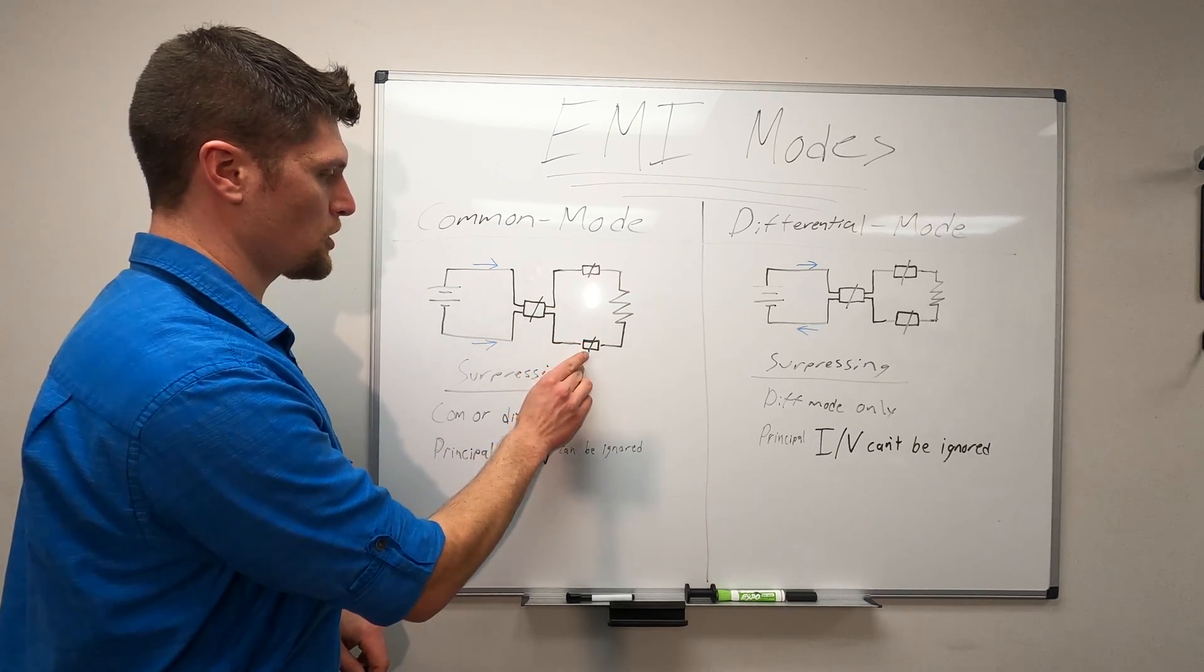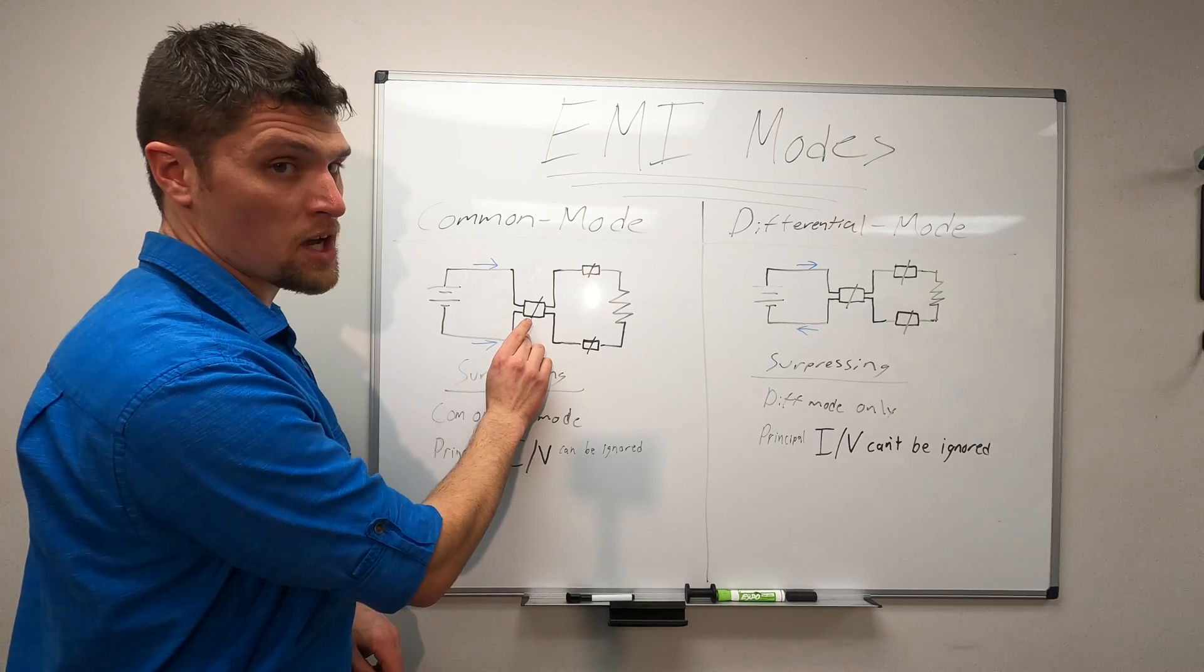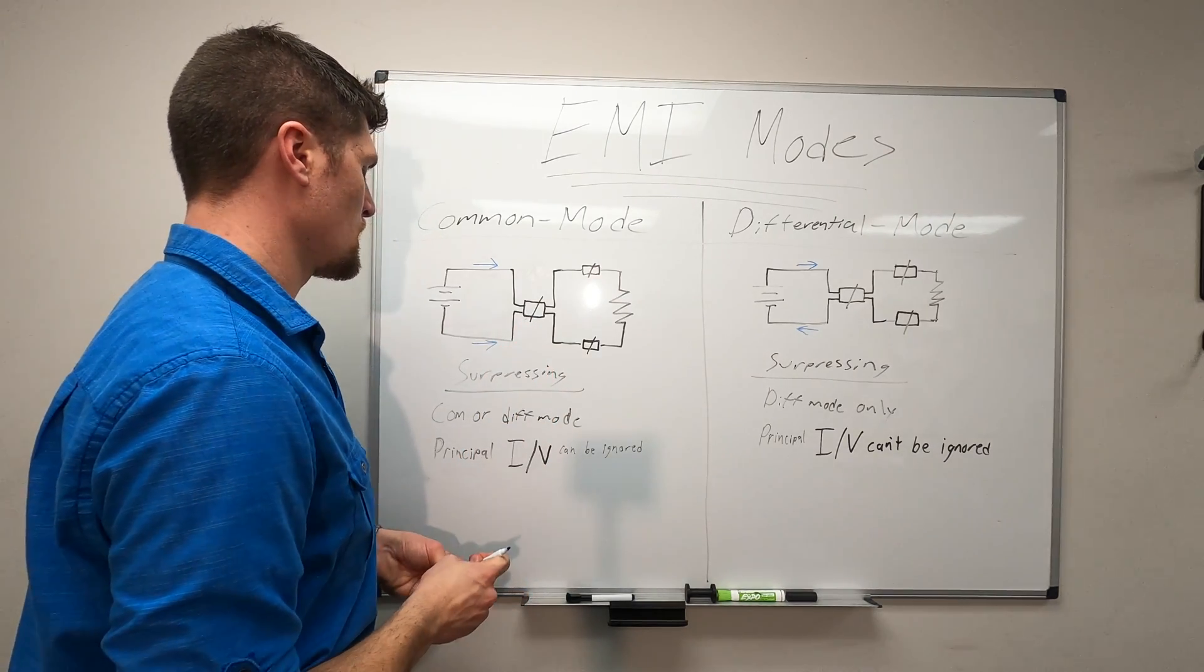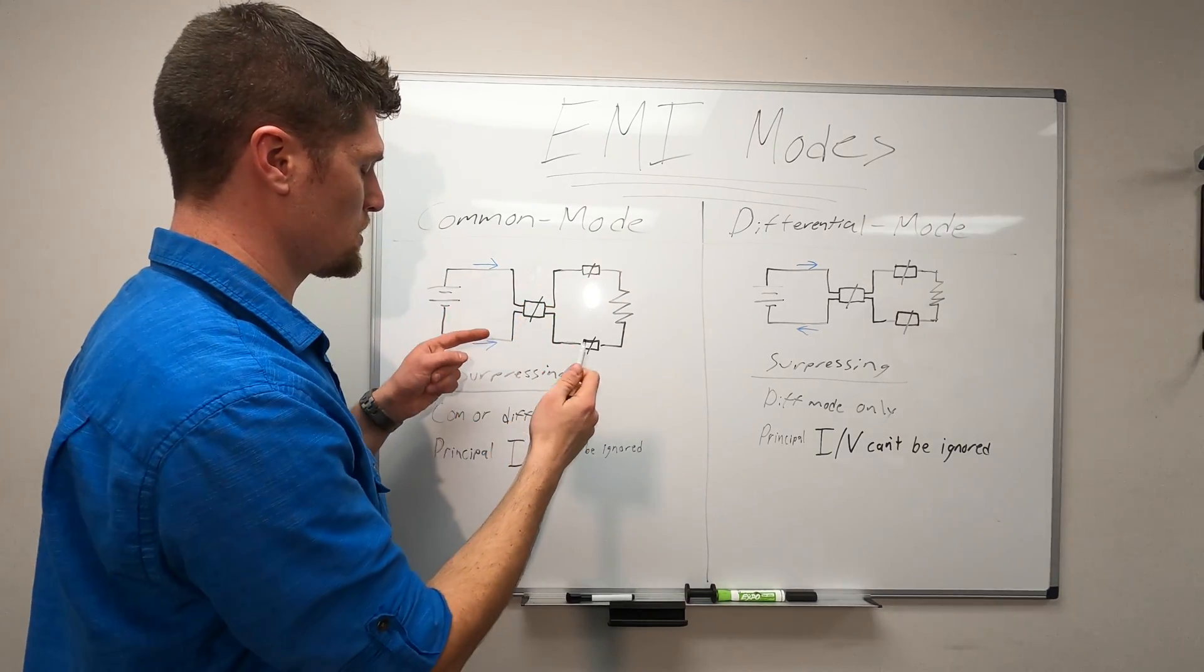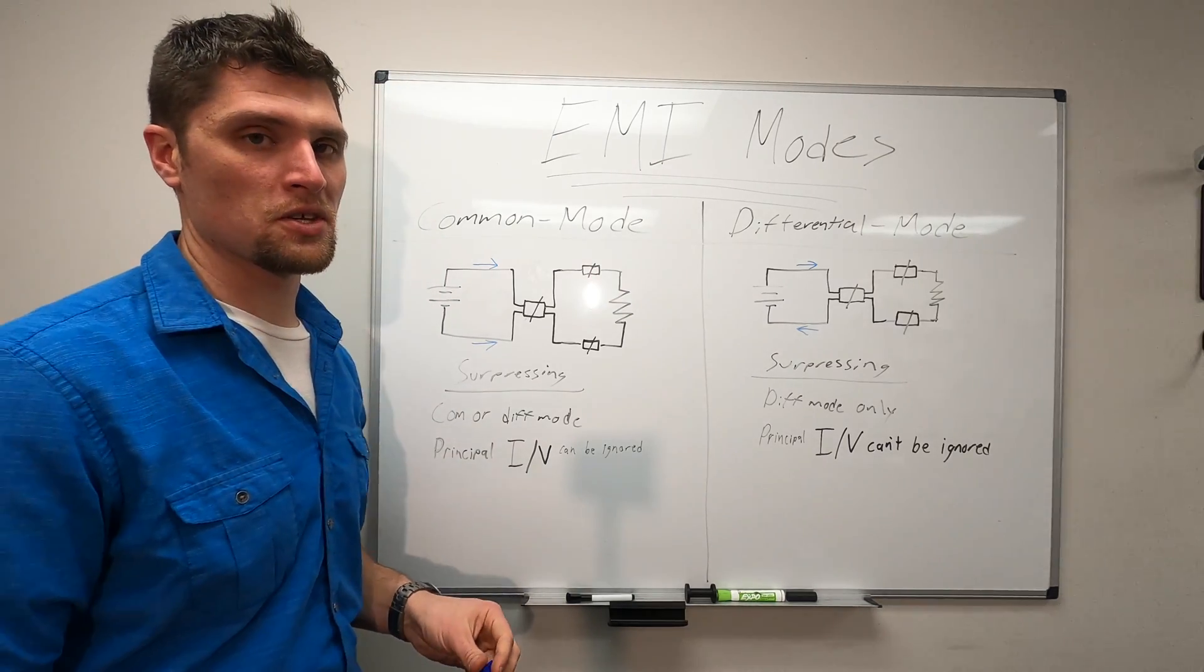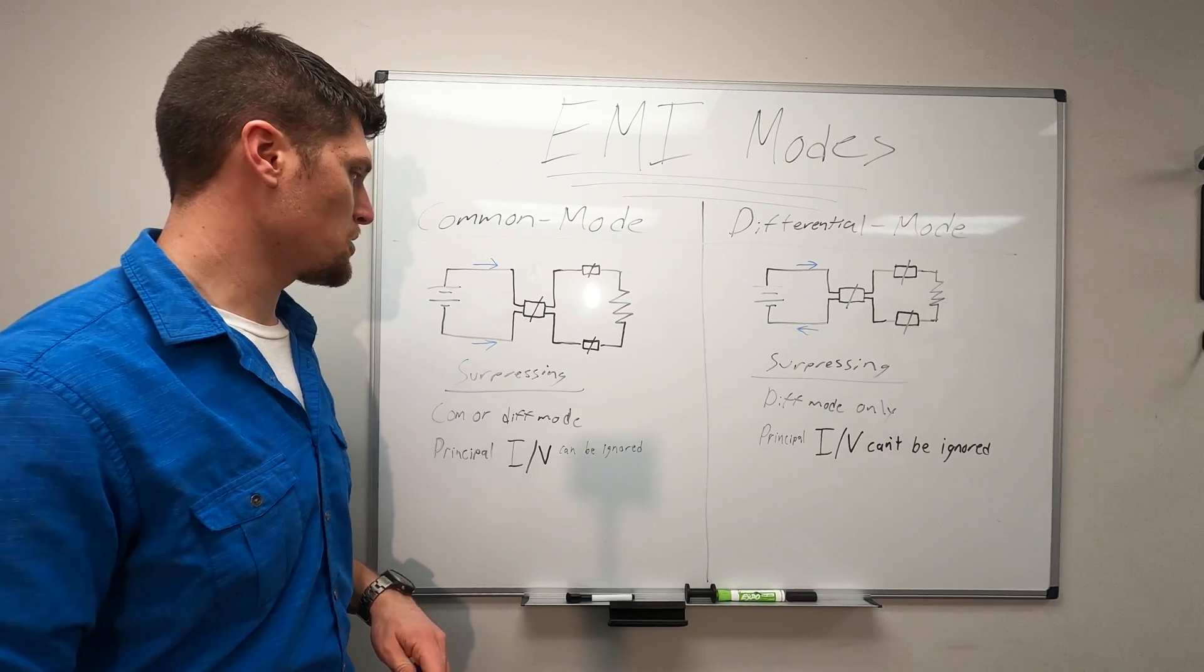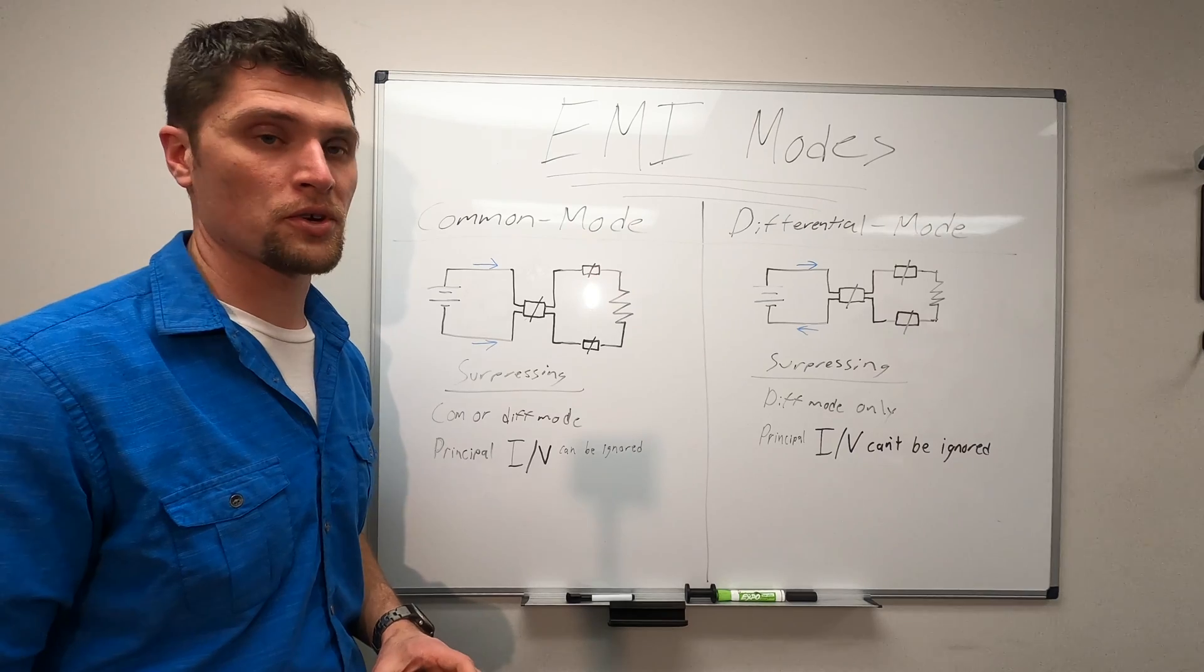So these two are operating in differential mode. This one is operating in common mode. Now what happens when you have currents going through a ferrite in opposite directions is the magnetic fields that they induce in the ferrite core will cancel each other out, and the core will essentially be inert to the EMI or the current in the circuit.